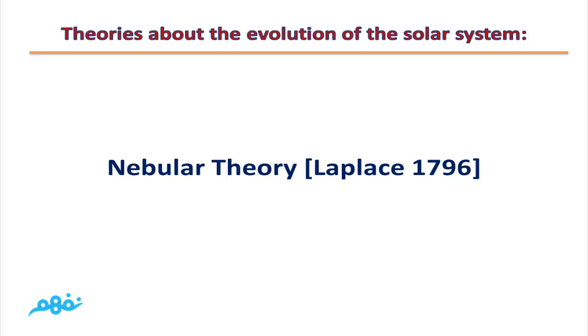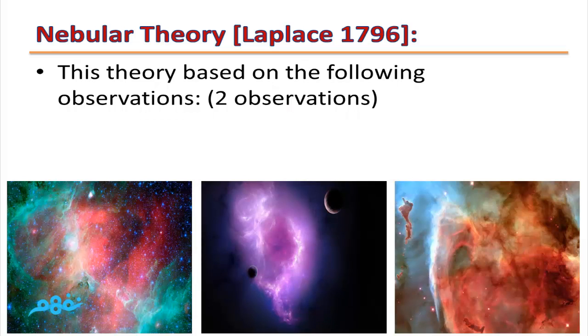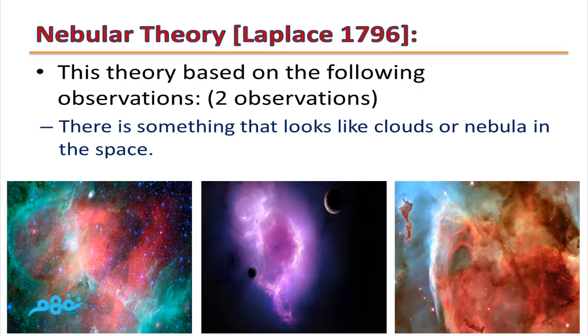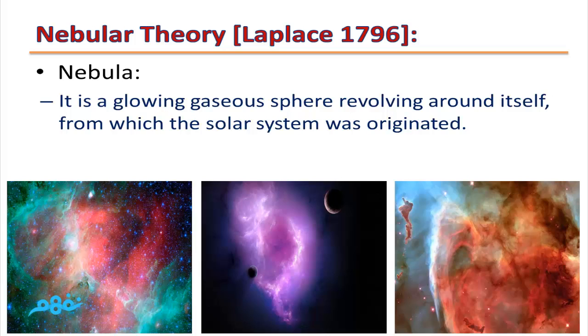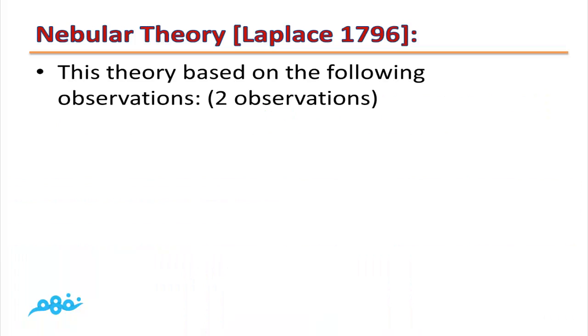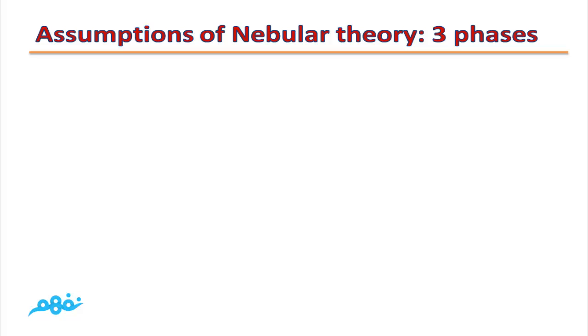Nebular Theory, Laplace 1796. This theory is based on the following observations: First, there is something that looks like clouds or nebula in space. Nebula is a glowing gas sphere revolving around itself, from which the solar system was originated. According to these two observations, Laplace formed his theory.